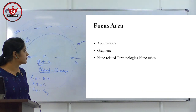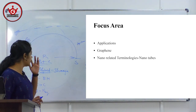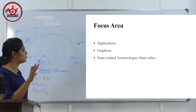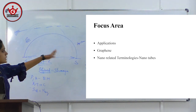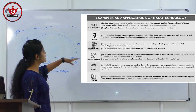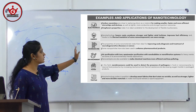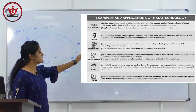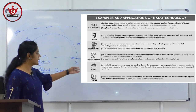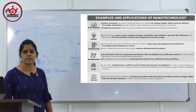Moving on to nanotechnology. Application-based questions can be expected. Graphene is important. Nano-related terminologies like nanotubes can also be asked. Applications of nanotechnology: in electronics — graphene; in energy — stronger and lighter materials; in biomedicine — treatment of neurodegenerative diseases; in environment — air purification; in food — nano biosensors; in textiles. Questions like 'which of the following are applications of nanotechnology' can be expected.